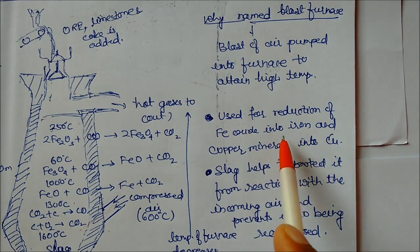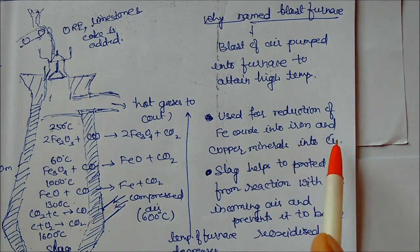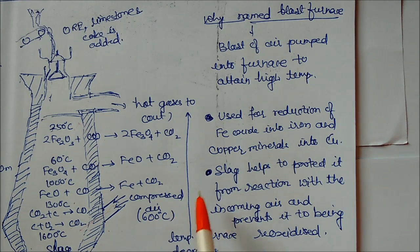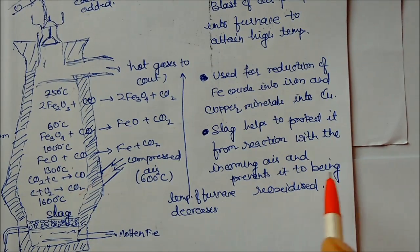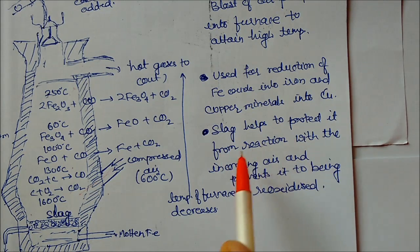Blast of air, we have seen here, is pumped into the furnace. It is used for the reduction of iron oxides normally into iron and copper ores into copper. Normally we are taking this for the blast furnace.